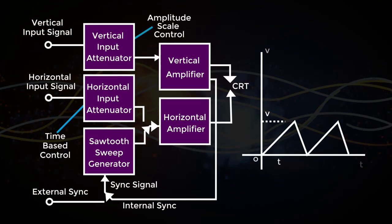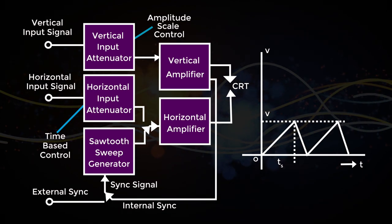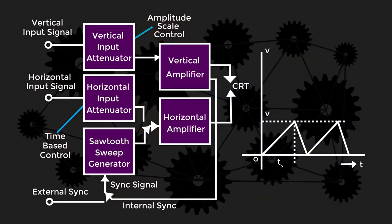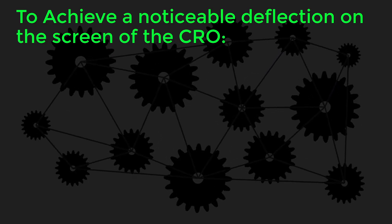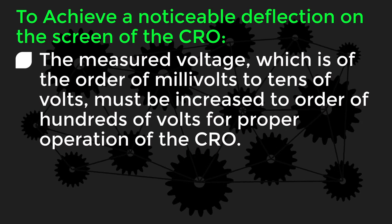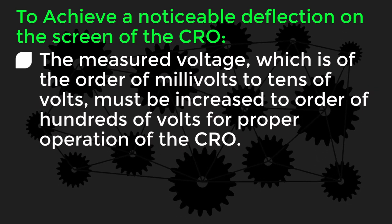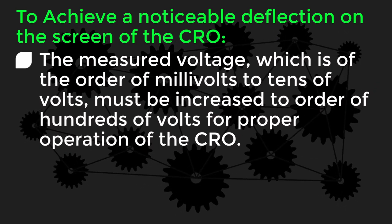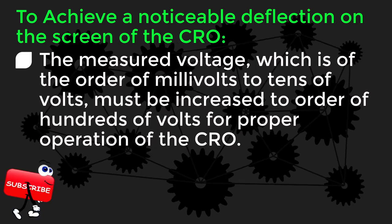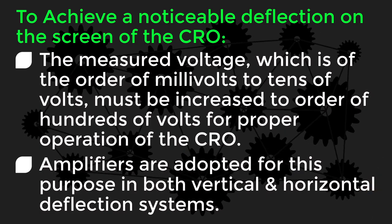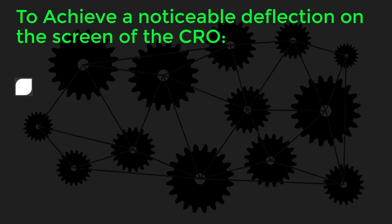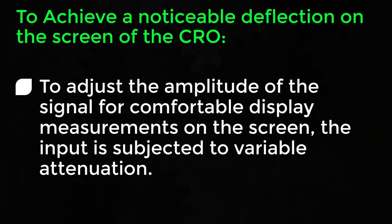Below figure shows a basic block diagram of a CRO. To achieve a noticeable deflection on the screen of the CRO, the measured voltage, which is of the order of millivolts to tens of volts, must be increased to the order of hundreds of volts for proper operation of the CRO. Amplifiers are adopted for this purpose in both vertical and horizontal deflection systems. To adjust the amplitude of the signal for comfortable display measurements on the screen, the input is subjected to variable attenuations.